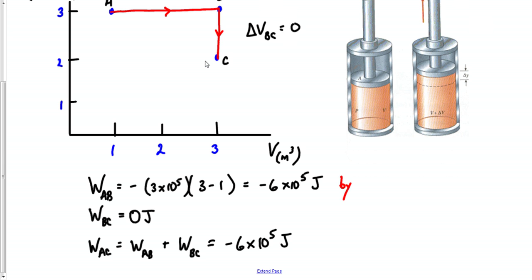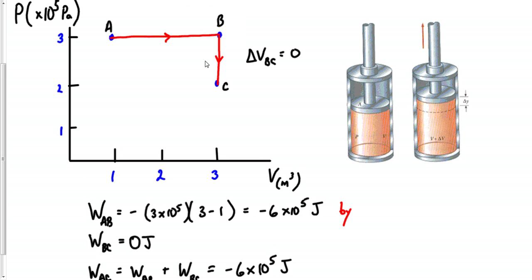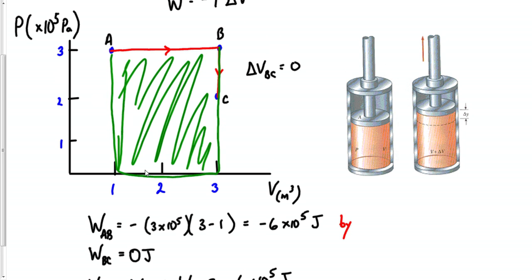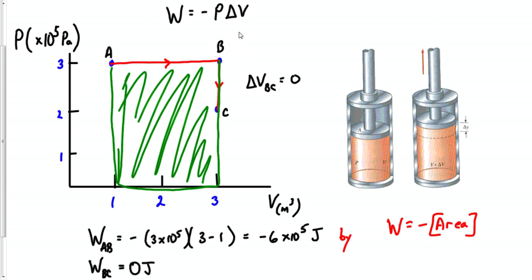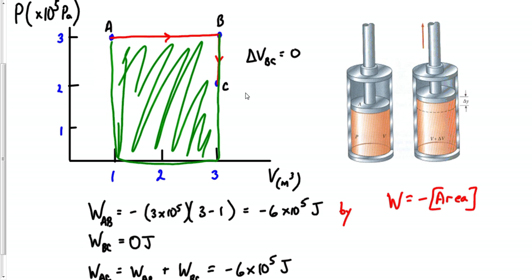You can also find the work by looking at the area underneath the line. For example, if you want to find work A to B, the area underneath A-B would be 3 times 2, which is 6 times 10 to the 5 — and knowing that it goes to the right, make it negative. Work is equal to the negative of the area underneath one of these PV diagrams. That comes in handy especially if there's a triangle where the pressure isn't constant and we can't just apply the equation. This also works for B to C — there's no area under that vertical line, so the work is 0. This is a very common one of these problems.